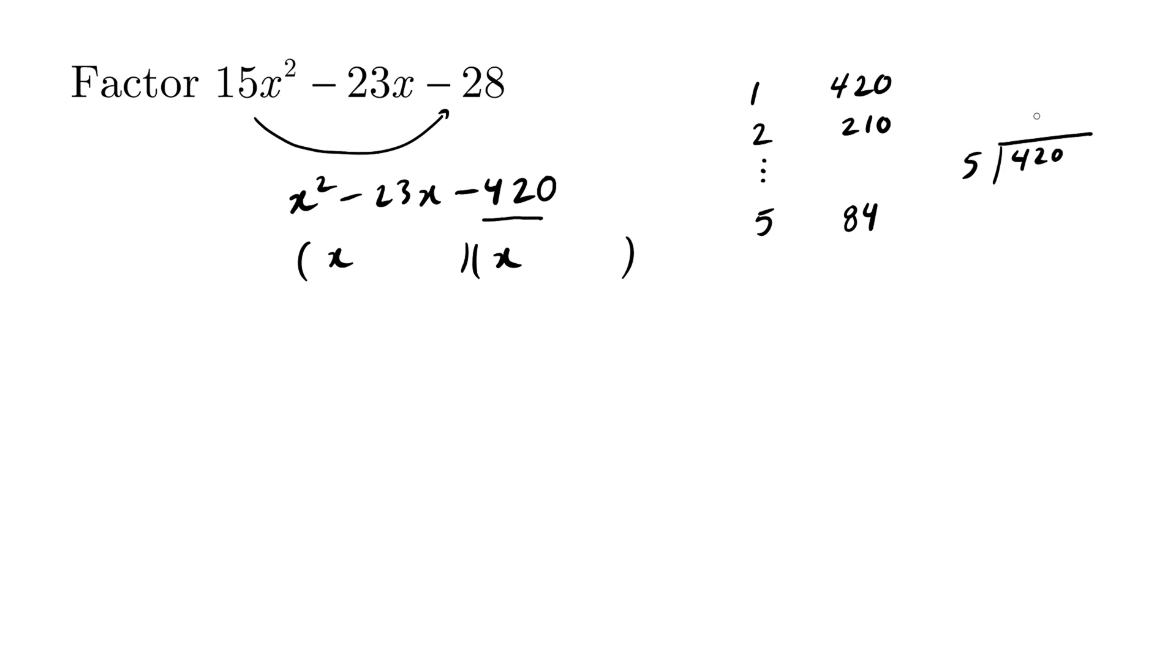5 times 8 is 40. You drop a 2. You drop a 0. 5 times what is 20? It's a 4. 5 times 4 is 20 and there's no remainder. So this is how we did this one here but we're not quite there yet.